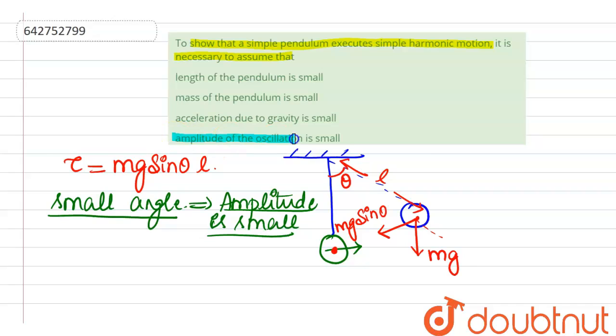The correct option will be the fourth option, amplitude of oscillation is small. Thank you.